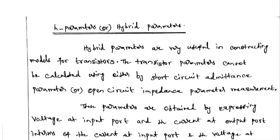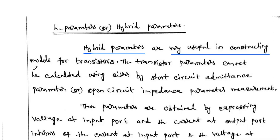In this video we are going to discuss the third parameter for the two-port network: the H-parameter, or hybrid parameter. In the previous two videos we discussed the Z-parameter (impedance parameter) and the Y-parameter (admittance parameter). This hybrid parameter is very useful in constructing models for transistors.